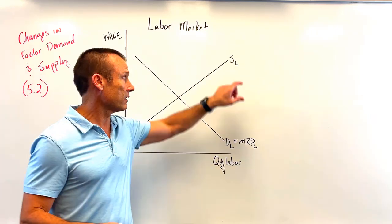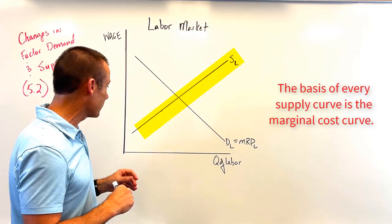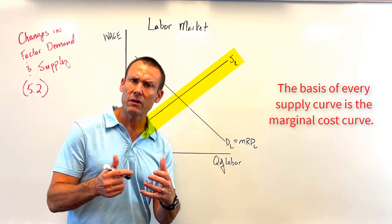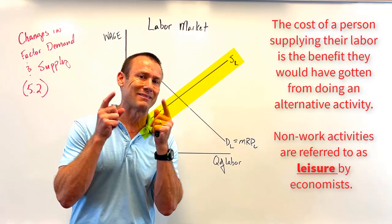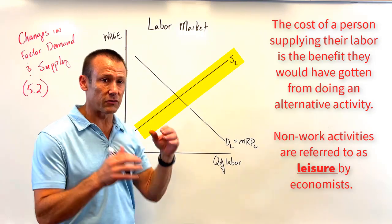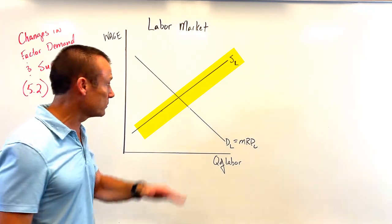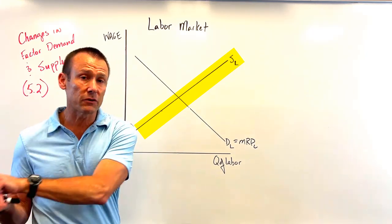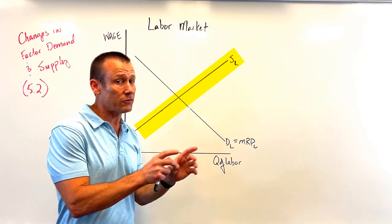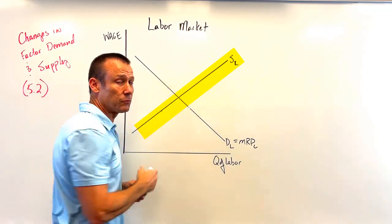Every supply curve in the world is a marginal cost curve. What we're really doing is we have these marginal costs giving us the supply of labor. What is the cost of laboring? It's what you're giving up — and what are you giving up? It is leisure. If all of a sudden people want to do more leisure, the marginal cost of providing your labor goes up. When that marginal cost of labor goes up, the supply curve is shifting left — we get a decrease in the supply of labor.